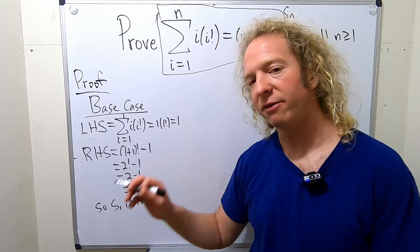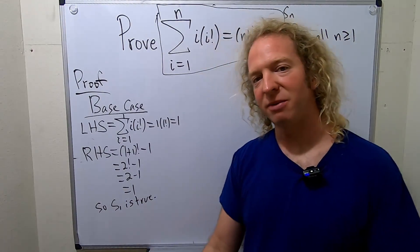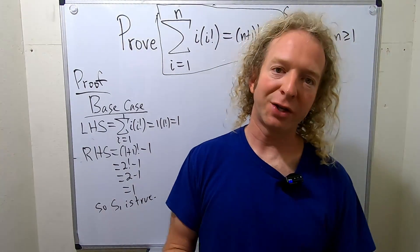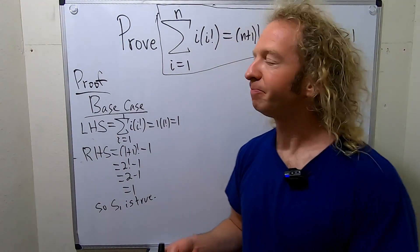So the statement is true when n is equal to 1 — S sub 1 is true. That takes care of the base case. Now we get to write down the induction hypothesis.